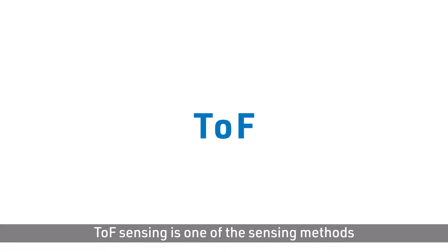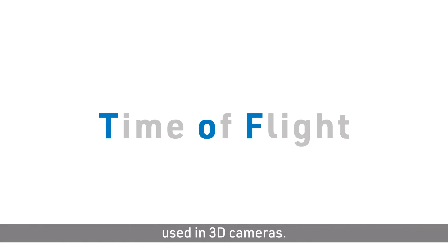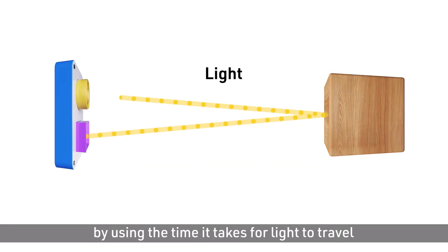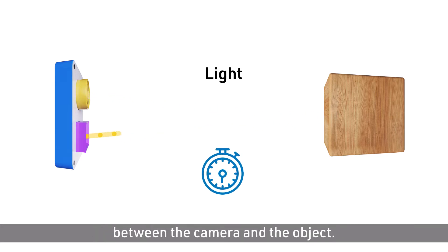TOF sensing is one of the sensing methods used in 3D cameras. TOF camera measures the distance by using the time it takes for light to travel between the camera and the object.